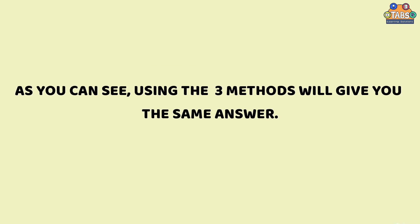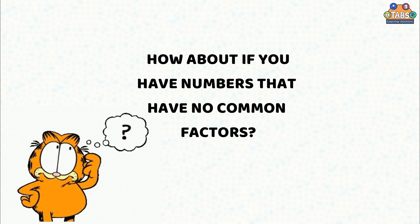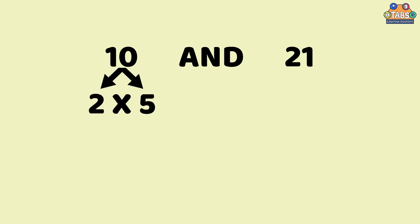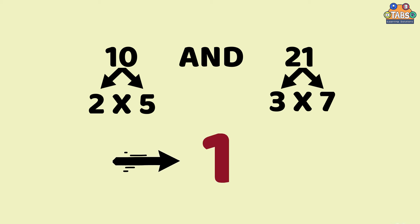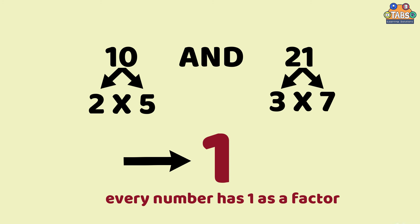As you can see, using the three methods will give you the same answer. But what if you have numbers with no common factors, like 10 and 21? The factors of 10 are 2 and 5, while the factors of 21 are 3 and 7. If there is no common factor, then the GCF is 1, because every number has 1 as a factor.